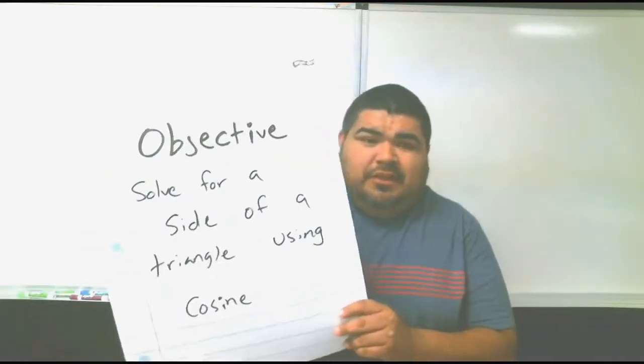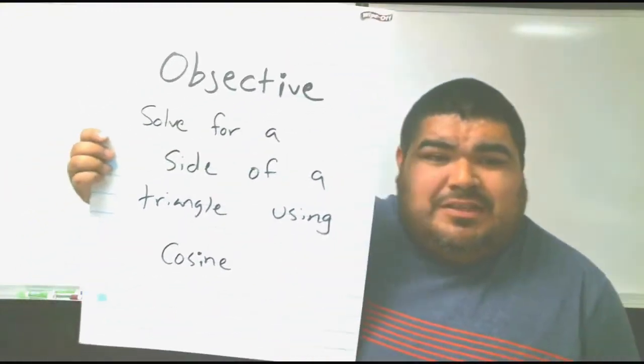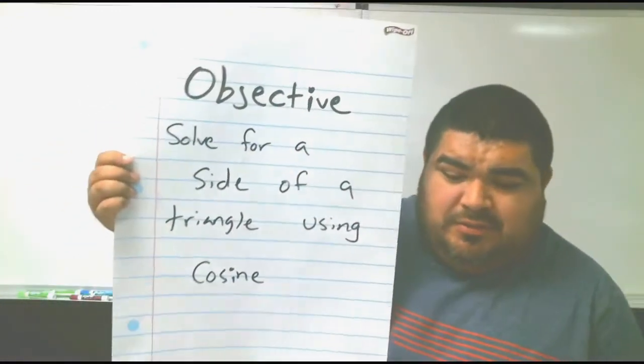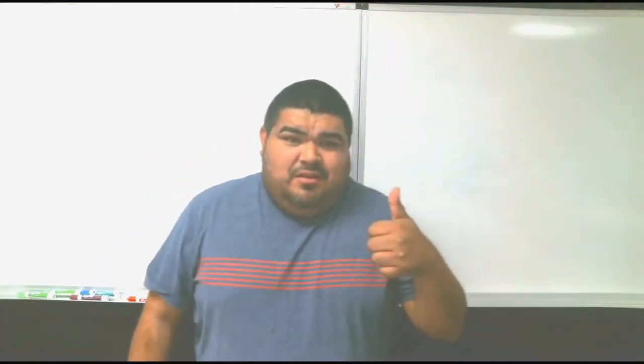So our objective for today is to solve for a side of a triangle using cosine. We found the area using sine. We pretty much used law of sine to solve for an angle or a side. Today we are using cosine. I will say this, there are different ways to solve for a triangle either angles or sides. This is one of those methods. In order to solve for cosine or using cosine, you should have at least two sides and an angle.